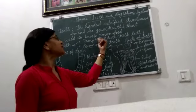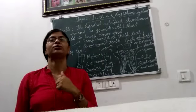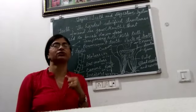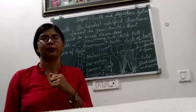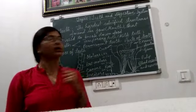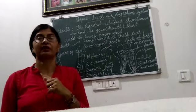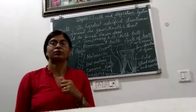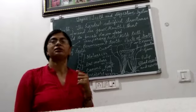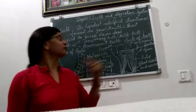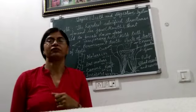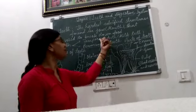A child has temporary teeth up to age 12 to 13 years. When a child is born, he or she does not have any teeth in his or her mouth. But between 6 to 12 months, teeth start to emerge. And by the time a child is 2 to 3 years old, they have developed 20 teeth, known as temporary teeth or milk teeth. When a child becomes 5 to 6 years old, they start falling off.